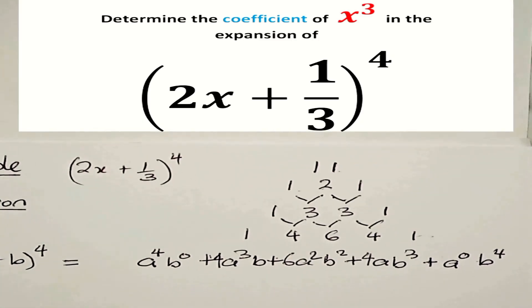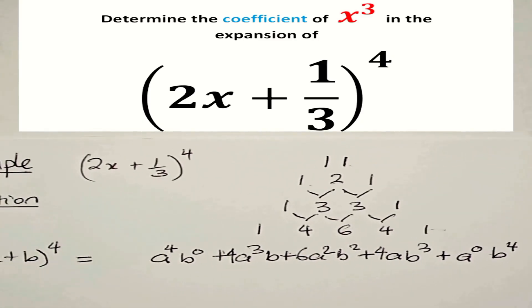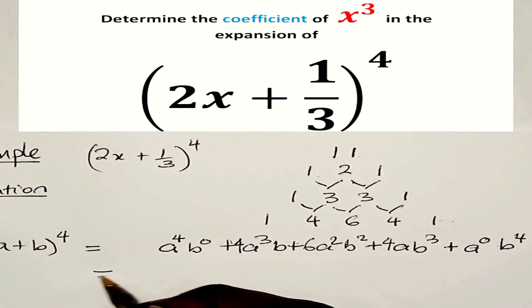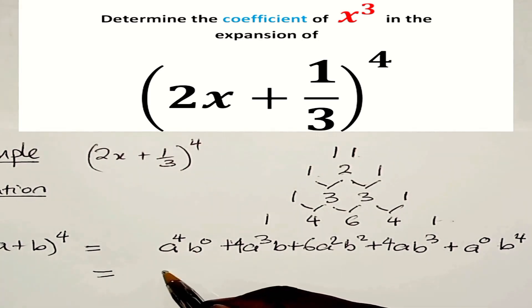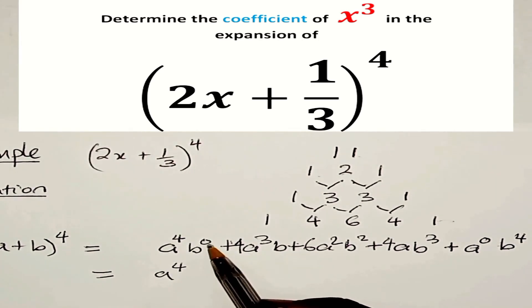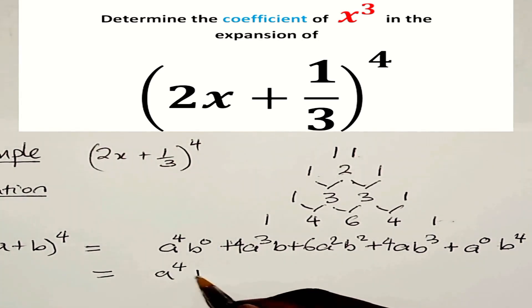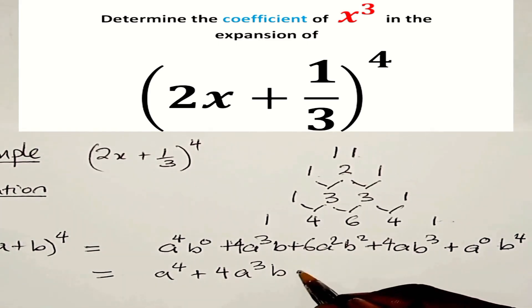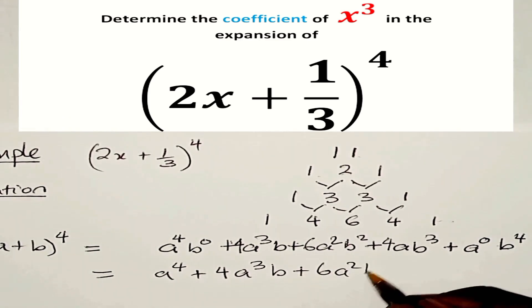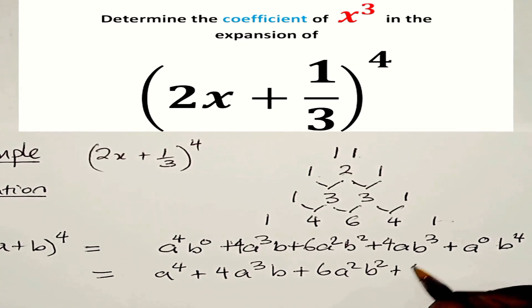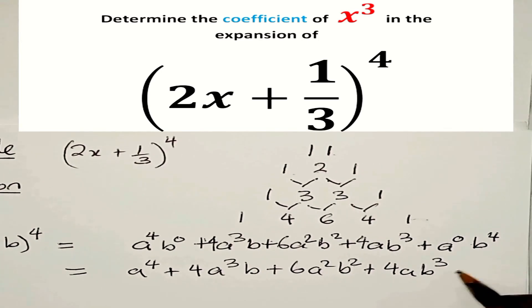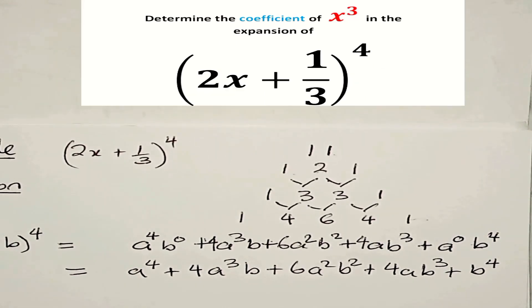Now let's simplify that formula. A plus b to the power of 4 is equal to: a to the power of 4, plus 4 times a to the power of 3 times b, plus 6 times a squared times b squared, plus 4 times a times b to the power of 3, plus b to the power of 4. Remember, b to the power of 0 is 1 and a to the power of 0 is 1.